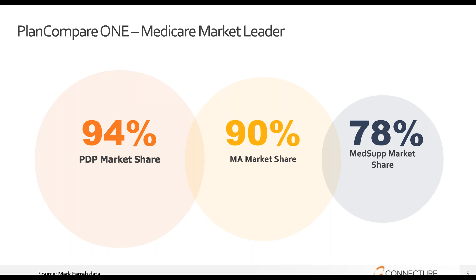Plan Compare One is the digital Medicare platform of choice for many FMOs, and we also work with health plans and large agencies across the country. We are the market leader, serving the largest market share in the industry. We support all Medicare plan types and multiple ancillary products. Our hundreds of health plan carriers have over 5,700 plans on our platforms and boast 94% of the PDP market, 90% of the MA/MAPD market, and 78% of the MedSup market. We serve more than 100 FMOs and agencies, and we also offer dental and vision quoting, with enrollment on the horizon.